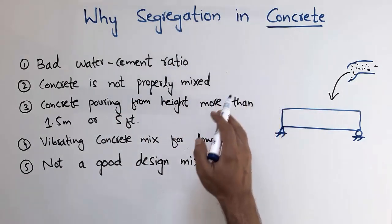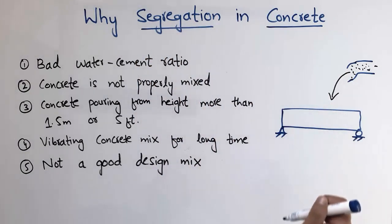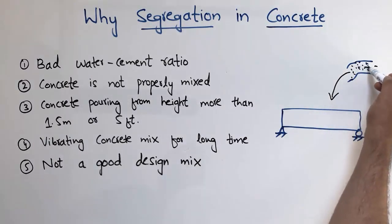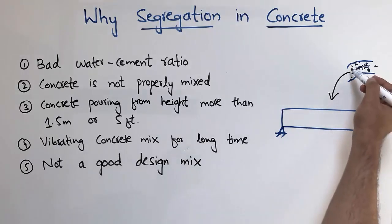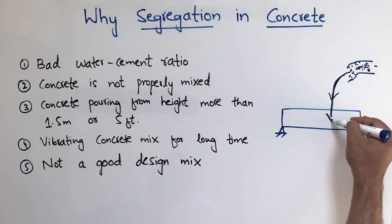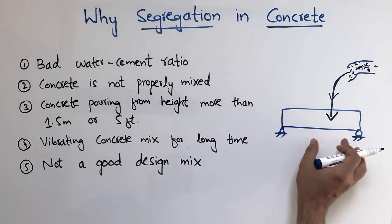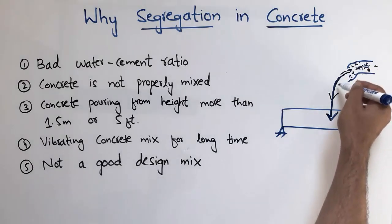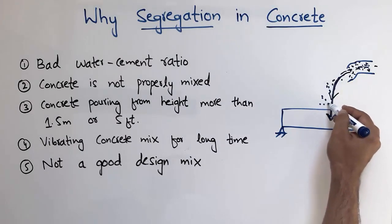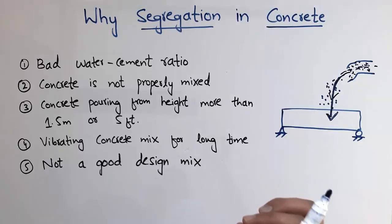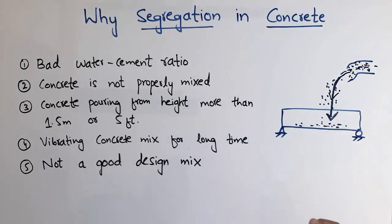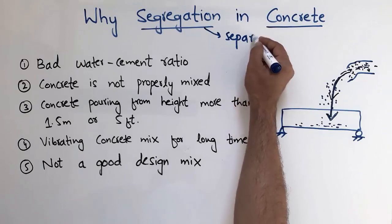We should be careful while designing the concrete mix. I will explain segregation with an example. Consider a beam where we pour concrete from above using a machine. When the concrete falls into the beam, the components separate — the coarse aggregate, fine aggregate, and water move away from one another. The coarse aggregate falls first, before the fine aggregate and cement. This phenomenon is known as segregation in concrete — it means the separation of concrete components from one another.